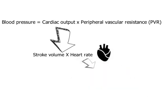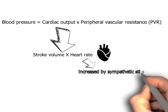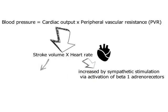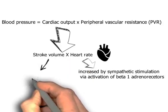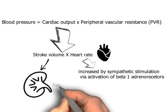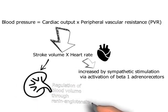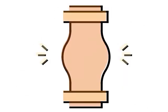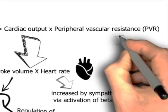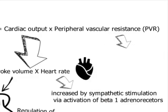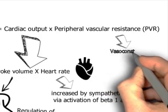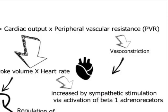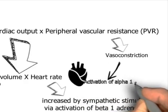Cardiac output can be increased by the increase in heart rate by sympathetic stimulation through activation of beta-1 adrenoceptors. The stroke volume is directly related to blood volume, which is largely regulated by the kidneys. On the other hand, peripheral vascular resistance, or PVR, is the resistance offered by the circulatory system to the flow of blood, and depends on vascular smooth muscle tone in various vascular beds.